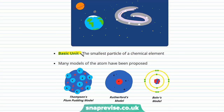Many models of the atom have been proposed over the years. We have Thomson's plum pudding model, which shows a central positive sphere studded with negative electrons. We have Rutherford's model, which proposed there was a central nucleus. And we have Bohr's model. We'll take a closer look at a model similar to that proposed by Bohr.